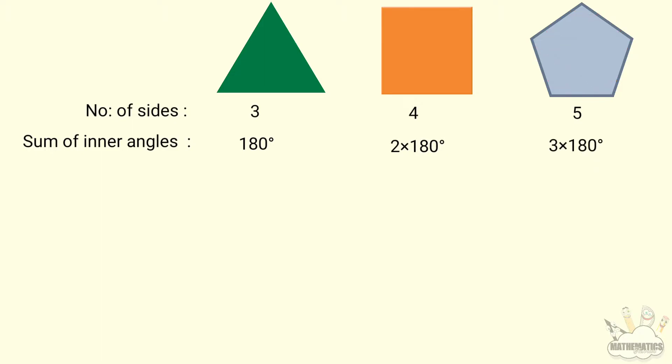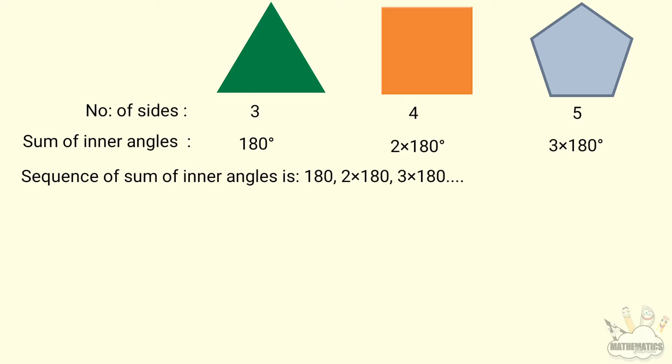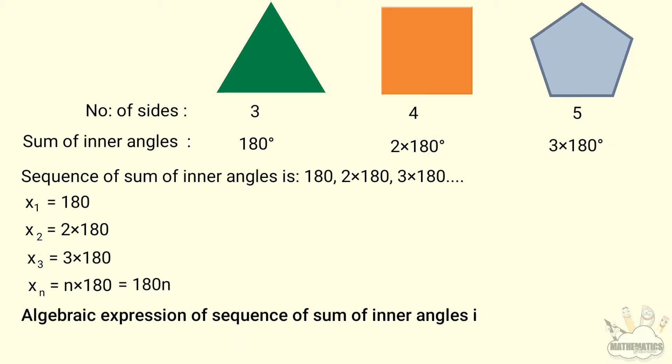So the sequence is: x1 = 180, x2 = 2 × 180, x3 = 3 × 180. Therefore, the algebraic expression for the sum of inner angles is xn = 180n.